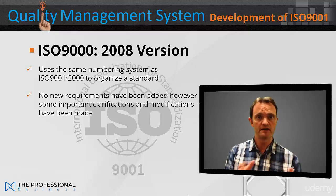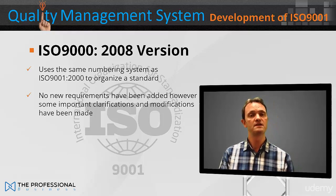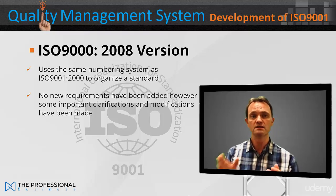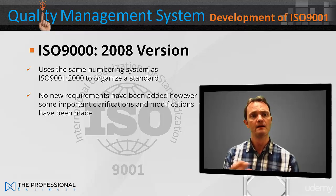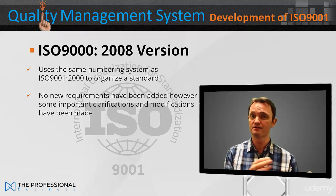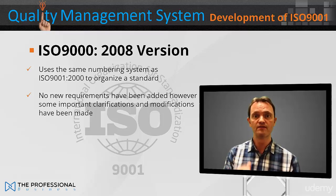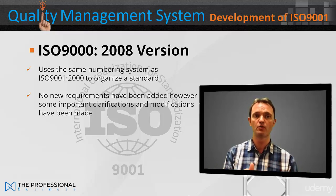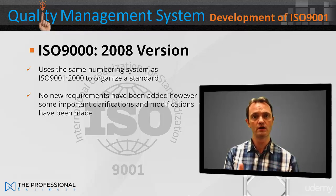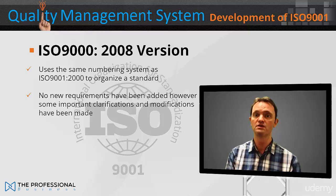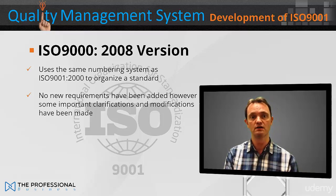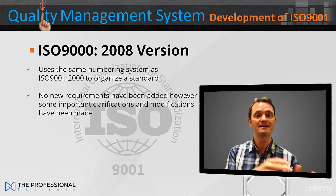The ISO 9001 2008 revision was published on 15th November 2008 and uses the same numbering system as the previous ISO 9001 2000 version. As a result, the new ISO 9001 2008 version looks very much like the old standard. No new requirements have been added; however, some important clarifications and modifications have been made. As with the release of previous versions, organisations registered to ISO 9001 2000 were given a period of transition so that the ISO 9001 2008 standards could be met.